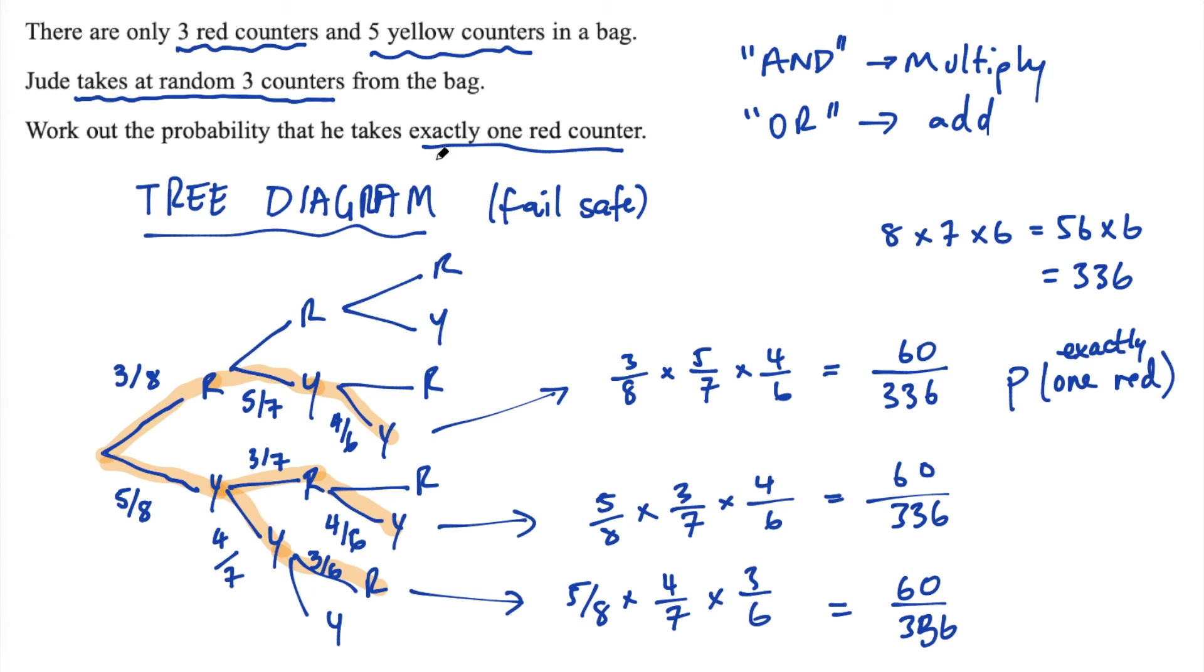And also, I should point out, we need to pay attention to the language used, because sometimes it will say at least one red. And then you need to consider many more paths here in this tree diagram. So exactly means we get exactly one red. Pretty self-explanatory, but look out for sometimes it will say at least and something else. So that will be a different outcome. So the probability here of exactly one red will be 60 plus 60 plus 60 is 180 out of 336. And don't waste your time simplifying. If it doesn't say to simplify the answer, you can leave it as this. So just leave the fraction unsimplified. Go on to your next question.